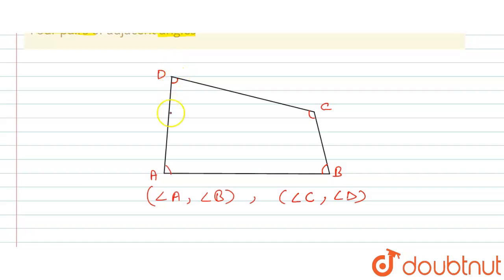The common arm that is AD, so here we can say that angle D and angle A are the common arms. This is the third pair. Now fourth pair.